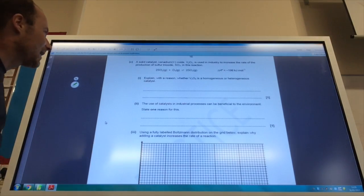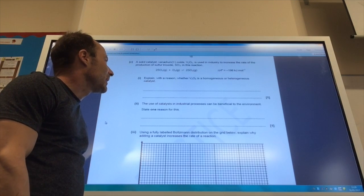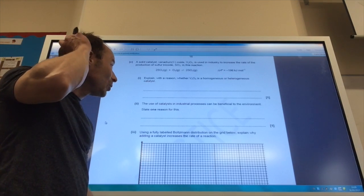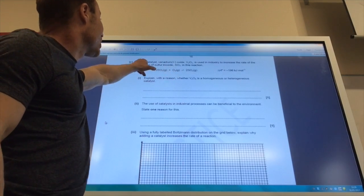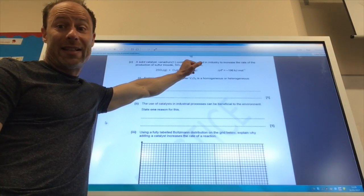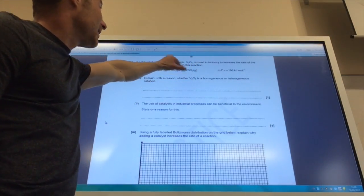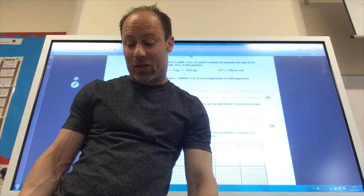Okay, they then asked me about catalysts now. Explain with reason why, whether vanadium 5 oxide is homogeneous or heterogeneous. It is of course heterogeneous, because this is a solid catalyst, whereas the reactants and products are gases, so it's in a different state. The catalyst is in a different state to the reactants, and therefore it is heterogeneous.